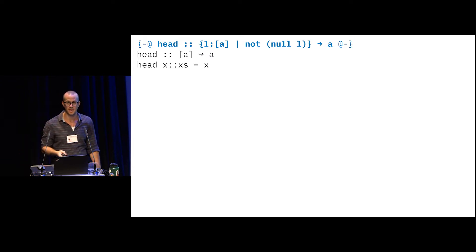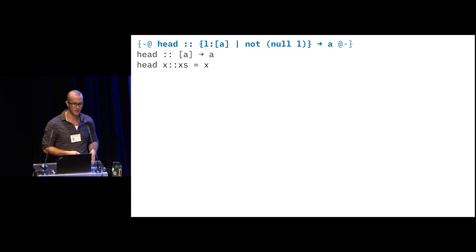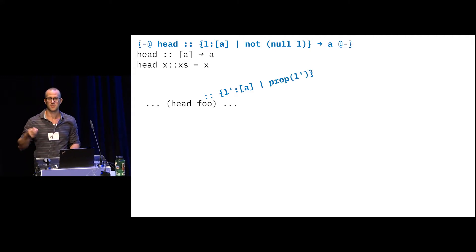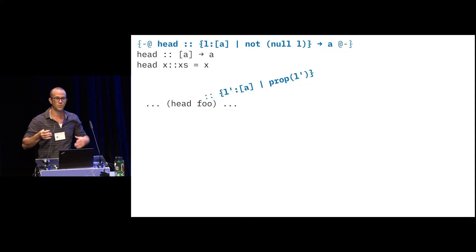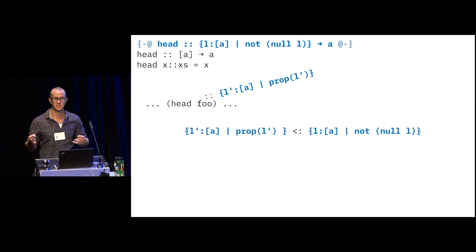So how does Liquid Haskell do it? Lycorgus already showed us sort of the gist of it. I want to give my very high-level perspective. So you take a partial function like head. So head is partial. It shouldn't be applied to an empty list. That would be bad. So you write a refinement that says, no no no, I'm only talking about the not null list. These are the ones I'm talking about.